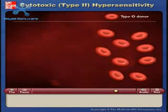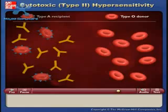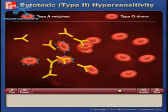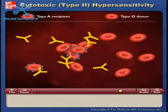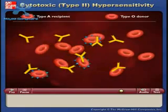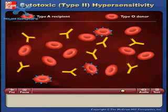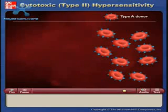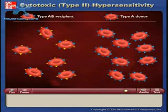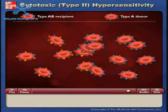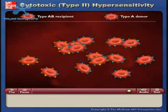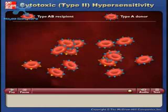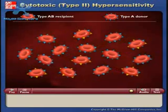Persons who are type O lack A and B antigens on the surfaces of their red blood cells and are therefore universal donors. Persons with type AB blood lack antibodies against A or B antigens and are therefore universal recipients.